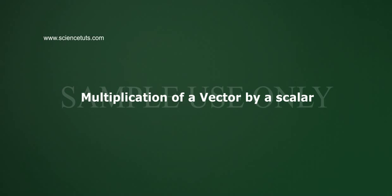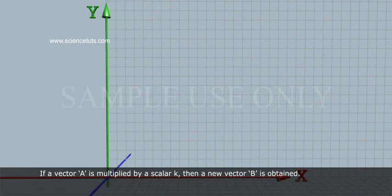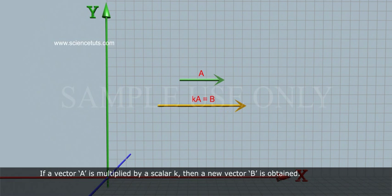Multiplication of a vector by a scalar. A vector can be multiplied by a scalar. If a vector A is multiplied by a scalar K, then a new vector B is obtained.